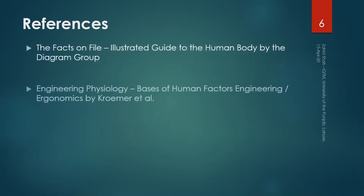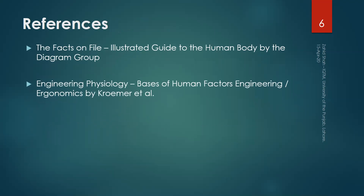The references for this segment and the following segments on the human musculoskeletal system are two very good books: first, the Phi Illustrated Guide to the Human Body by the Diagram Group, and second, Engineering Physiology: Basis of Human Factors and Ergonomics by Kroemer et al.